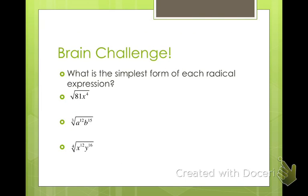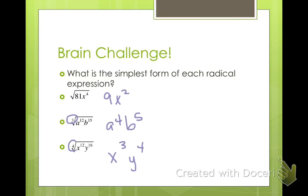Let's work through these examples. The square root of 81x to the 4th is 9x squared — still always a positive number. The cubed root of a to the 12th, b to the 15th is a to the 4th times b to the 5th — cubed roots can be negative, so no absolute values needed. The next one becomes x cubed times y to the 4th. Since it's a 4th root, we cannot have negative numbers, so we put absolute values around x cubed, but not around y to the 4th because that's always positive.